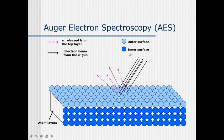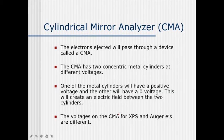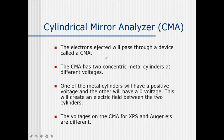An electron beam from an electron gun falls on both the outer level and the inner surface. Electrons are released from both the inner and outer layers of the atom. These released electrons can be analyzed by cylindrical mirror analyzers (CMA). The ejected electrons pass through an analyzer device. The CMA has two concentric metal cylinders at different voltages.